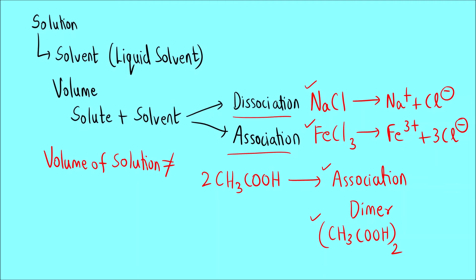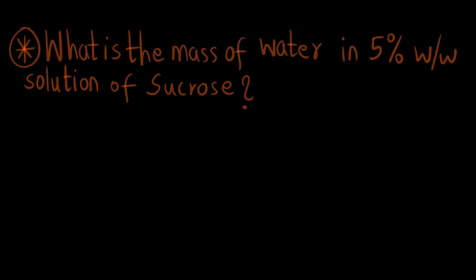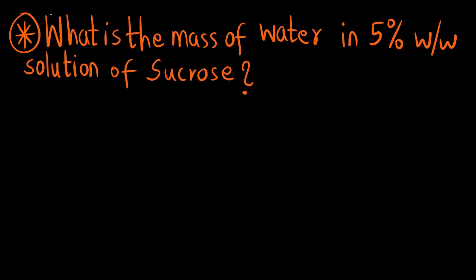So, volume of solution is not equal to volume of solute plus volume of solvent. However, mass does not change — that is why mass of the solution is equal to mass of solute plus mass of solvent. Now let us understand the concept of percentage weight by weight with the help of an example.